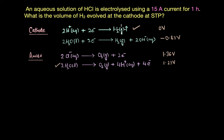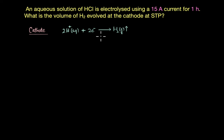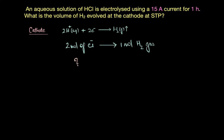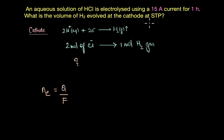From the cathode reaction, two moles of electrons are required to produce one mole of hydrogen gas. To find the moles of electrons available, we use the equation n = Q/F, where Q is the total charge passed through the solution and F is Faraday's constant. Q can be found using the formula: Q = current × time.